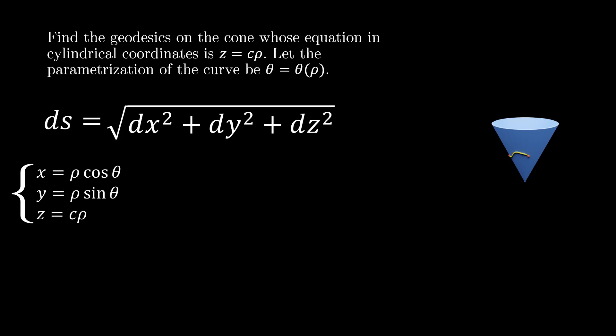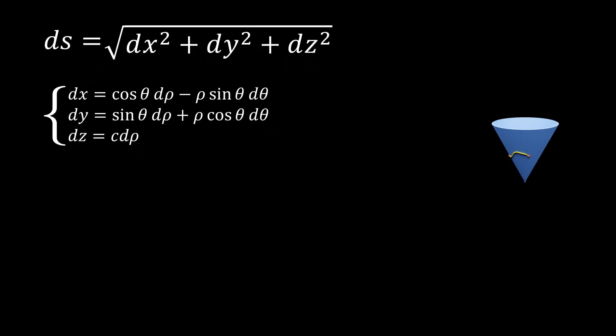Using the chain rule, we can differentiate these three equations and obtain equations for dx, dy, and dz. If we square these and add them up, then after some simplification, we get 1 plus c squared times d rho squared plus rho squared times d theta squared.